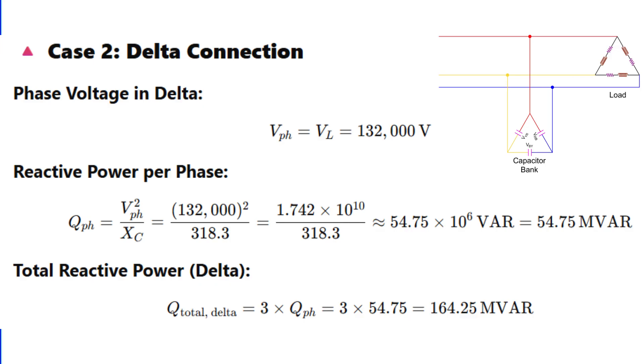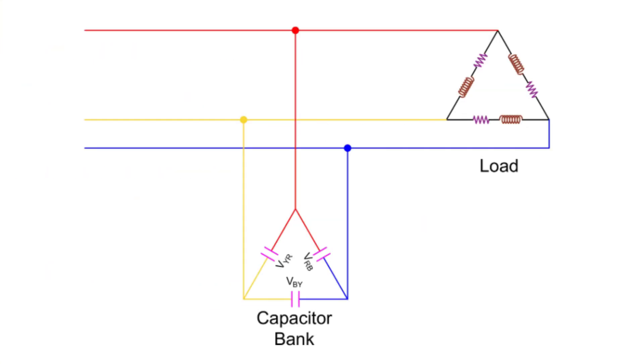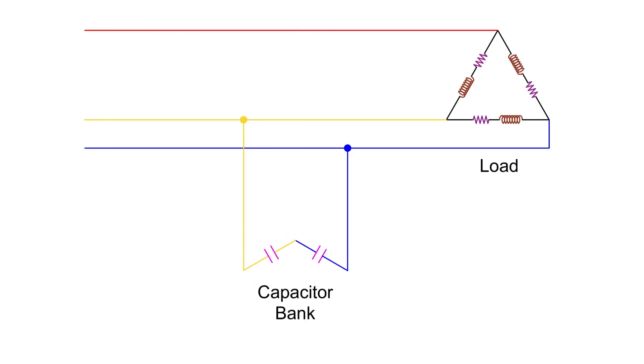And it doesn't end there. In delta, if one capacitor unit fails or is removed for maintenance, the other two still form a closed path and continue to supply reactive power. But in star, the loss of one leg makes the whole bank unbalanced and less effective. Also, delta doesn't require a neutral connection, which is often not available in high voltage substations. That makes installation simpler.